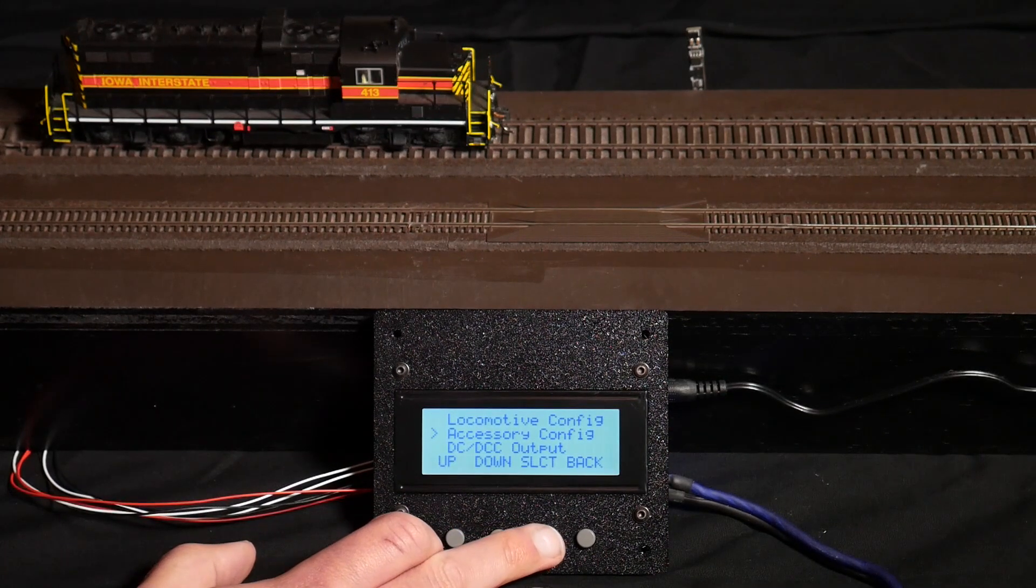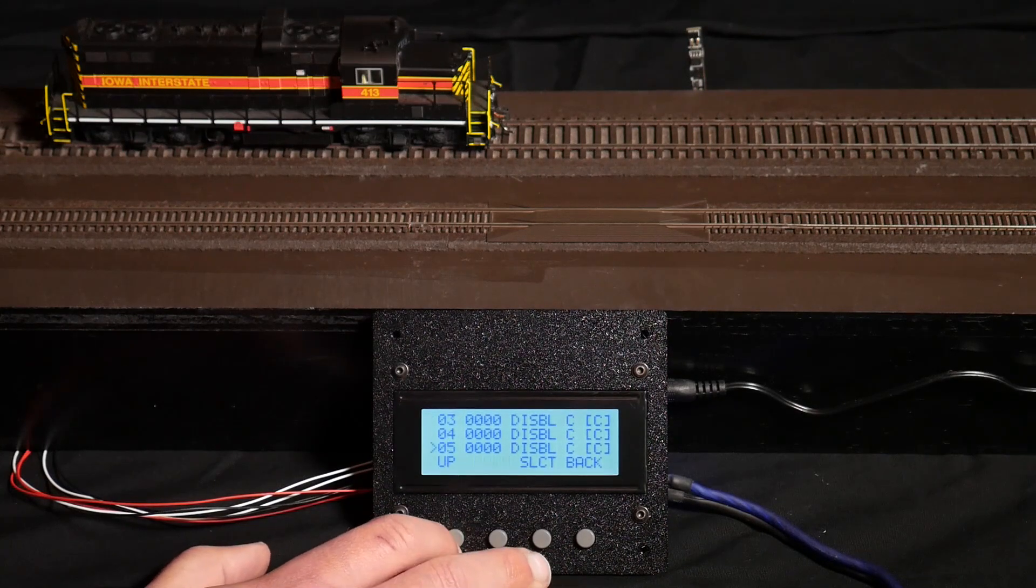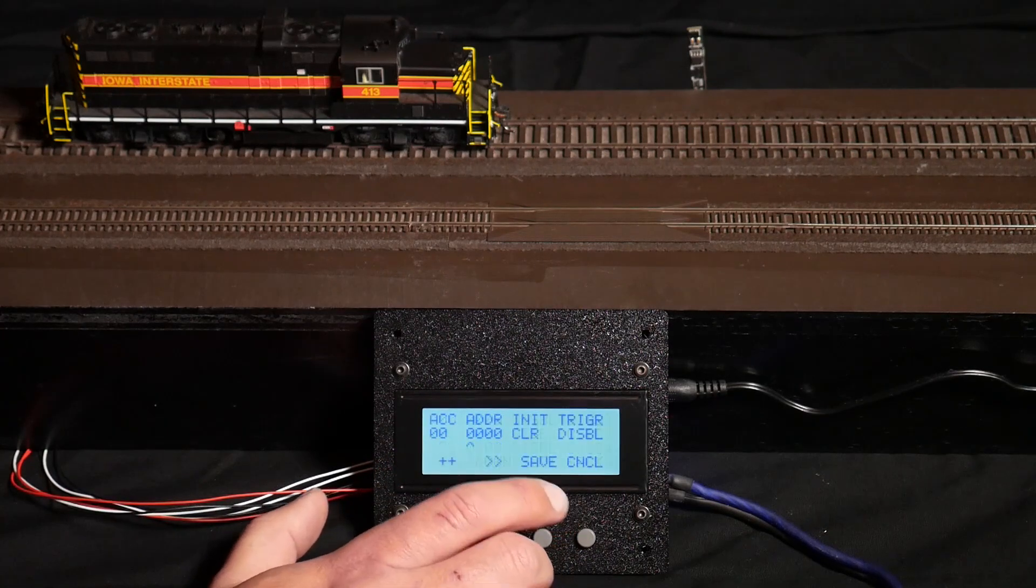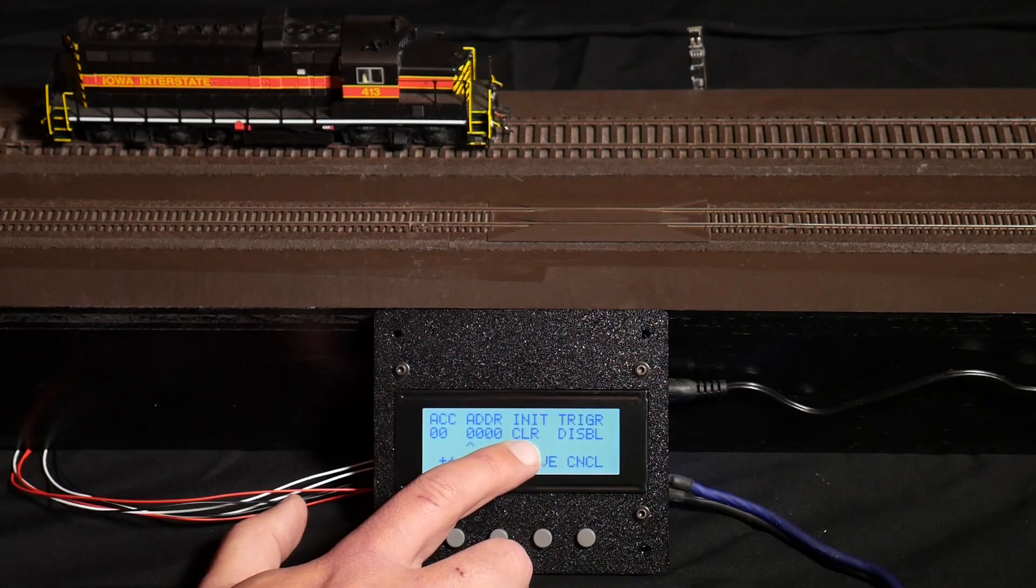Accessory configuration is very similar. There's up to six slots, and each one you can configure an accessory decoder address. So there's my address.